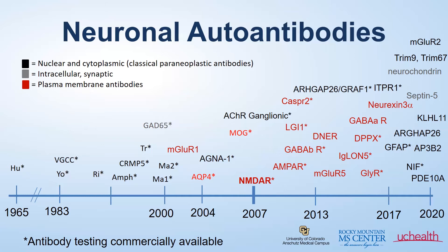Subsequently, NMDA receptor encephalitis was later described not only in women with ovarian teratomas, but in children, men, and women without an underlying cancer. Beyond just NMDA receptor encephalitis, other antibodies against cell surface and synaptic antigens have been identified with increasing frequency, all seen on this picture in red. The discovery of these cell surface antibodies has really shaped the landscape of autoimmune neurology, and it is now recognized that many of these antibody syndromes can be readily treatable with immune modulatory therapy.